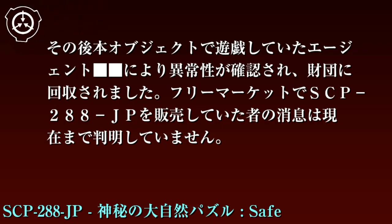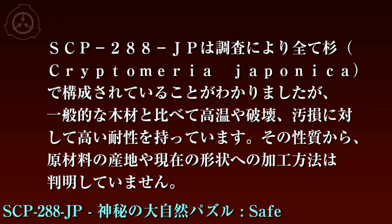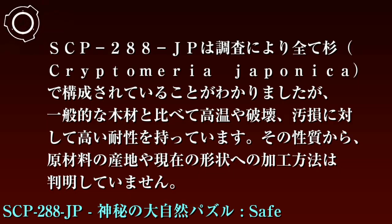説明：SCP-288-JTは表面に何も描かれていない薄緑色の15パズル（スライドパズル）です。SCP-288-JTは県町（現在は市）のフリーマーケットイベントにて、休暇中であったエージェントが何も描かれていないパズルが販売されていることに興味を示し、50円で入手しました。その後、本オブジェクトで遊戯していたエージェントにより異常性が確認され、財団に回収されました。フリーマーケットでSCP-288-JTを販売していたものの消息は現在まで判明していません。